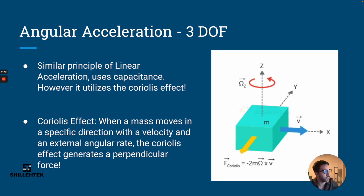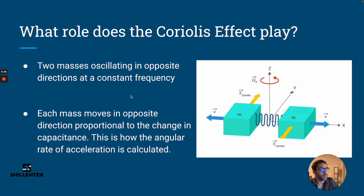It's this premise that generates a force that moves the proof mass on the gyro to get the capacitance change, which then gives us the angular acceleration. So what role does the Coriolis effect play? Let's imagine what's happening on the MPU6050: we have oscillating masses that are attached like this, and they're both moving in opposite directions with a specific velocity.